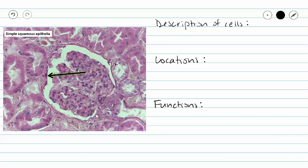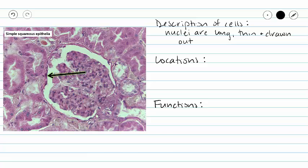Here we can see the same glomerulus in the middle — that's our glomerulus, a blood vessel network. Bordering our white space, we have simple squamous cells. We've got a few nuclei, and our nuclei are going to be long and drawn out. Our cells are going to be very thin as well. We can see some good nuclei here that are pretty thin and drawn out.